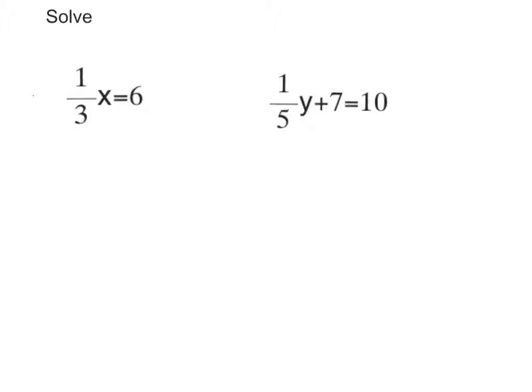Now in the first one, a third times x equals 6, the 3 is really dividing the x. So what I'm going to do is multiply both sides by 3.